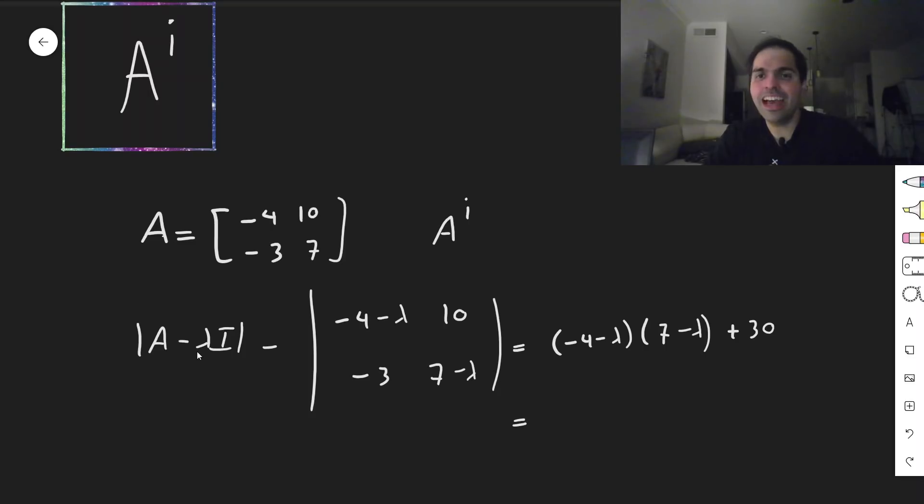And then that becomes minus 28, so 4 lambda minus 7 lambda, so minus 3 lambda, plus lambda squared, plus 30.